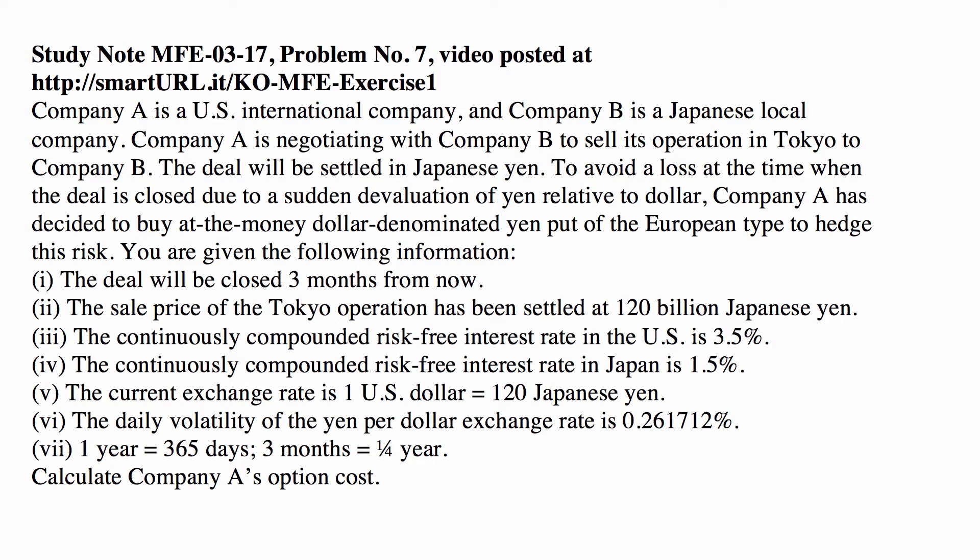One year has 365 days — this is the number you'll use to translate daily volatility to annual volatility. We don't always use 365 days; for example, John Hull's book uses only trading days when markets are open, which is about 252 per year. Also, three months is a quarter of a year.